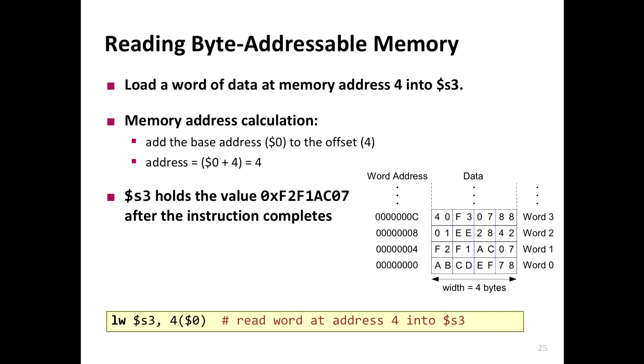In MIPS, you have base plus offset — the base is a register and the offset is an immediate value. Register plus register addressing doesn't exist in MIPS. That keeps the hardware simple.